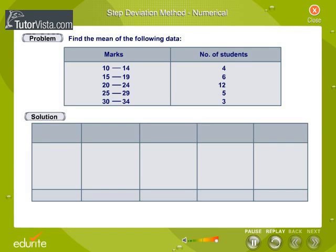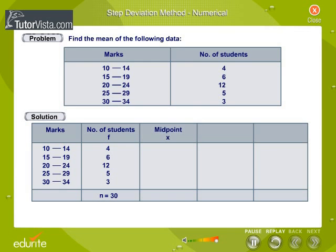Solution. The total number of students is obtained by adding all the frequencies. Therefore, n is equal to 30. We need to calculate the midpoint x for each of the class intervals of the marks.